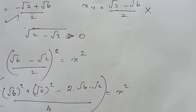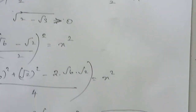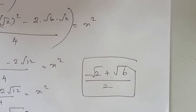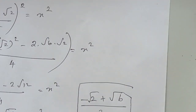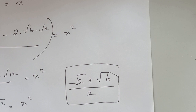(√6 minus √2) divided by 2 is the correct answer for this question. The answer is: √(2 minus √3) equals (√6 minus √2) divided by 2. If you like this video, please subscribe to my channel and support it by watching my videos. Thank you.